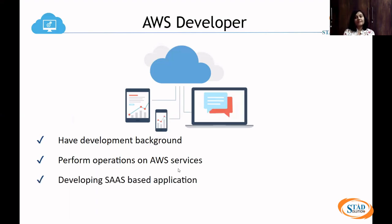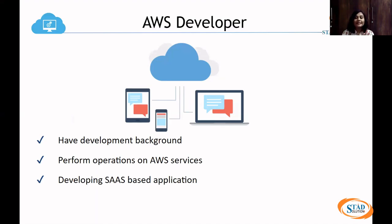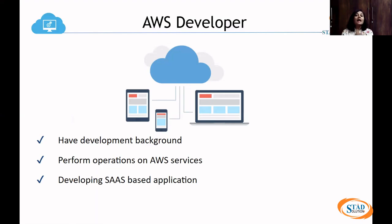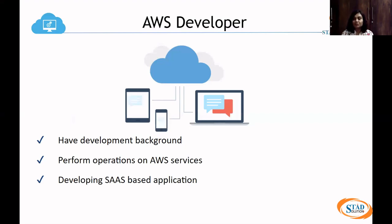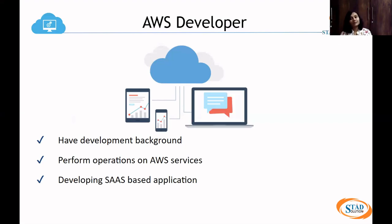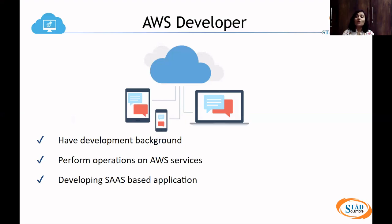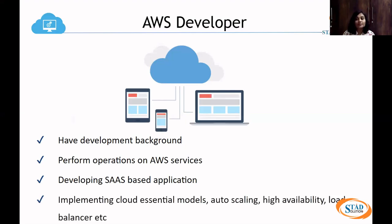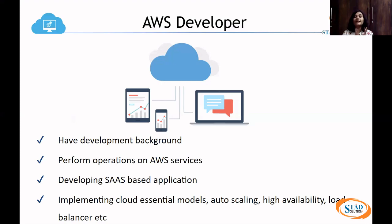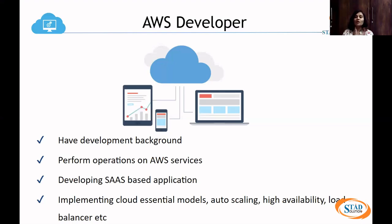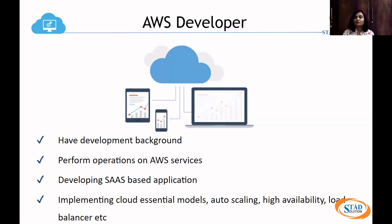For SaaS-based application development, you should know how to develop, create, and deploy your application, and when end users are using your application, you should know how to maintain it. You should know how to implement cloud service models like IaaS, PaaS, and SaaS. You should implement those models as well as AWS features like autoscaling, high availability, and load balancing. These are all the work roles that, being an AWS developer, you have to perform.